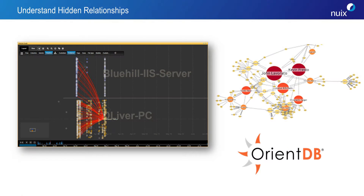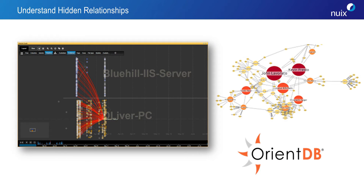NUX version 7 allows you to understand hidden relationships. This is one of the really powerful capabilities — we've embedded a graph database so that you can really start to understand and link together people, objects, locations, and events.